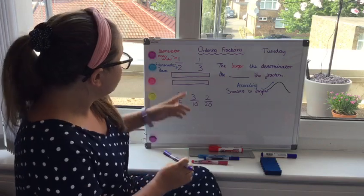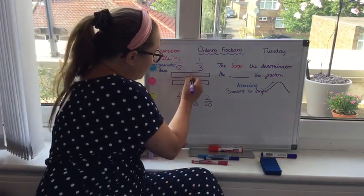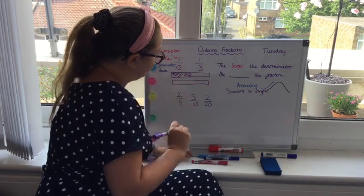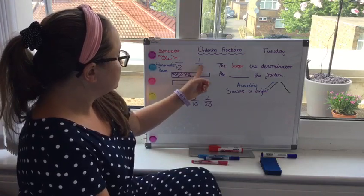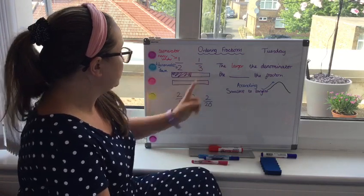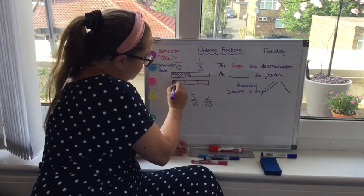So if the denominator is two, so a half, we can split this into a half and as we can see that is a half of that bar. Now a third would be split into three pieces, so the whole split into three, one third.